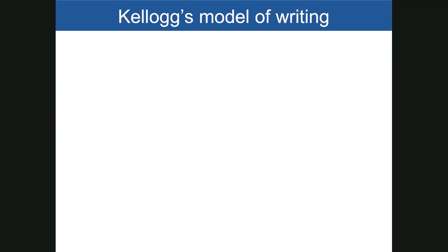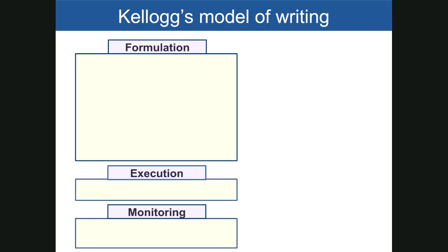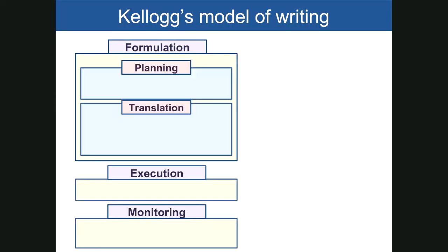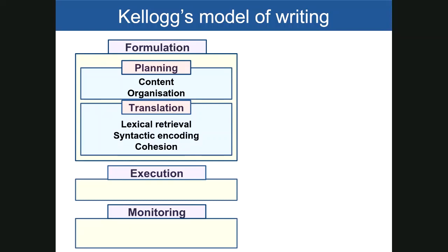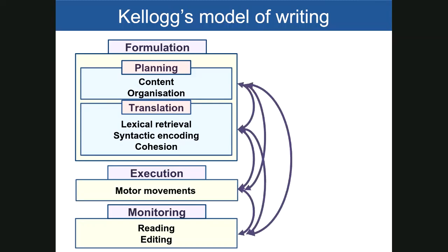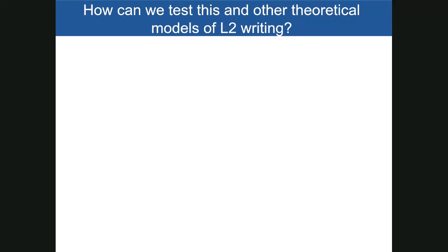For the purposes of our research we adopted Kellogg's model of writing. This model conceptualizes writing in terms of three sub-processes: formulation, execution, and monitoring. Formulation involves planning the content and organization of the written piece and translating that plan into linguistic form through lexical retrieval, syntactic encoding, and cohesion. At the execution stage, motor movements produce a handwritten or typed text. While we write, we also monitor our performance, re-reading and editing our text. This is an interactive model — all processes are supposed to work in parallel.